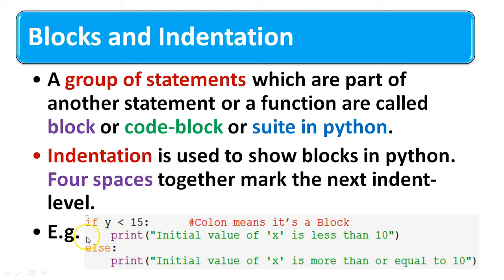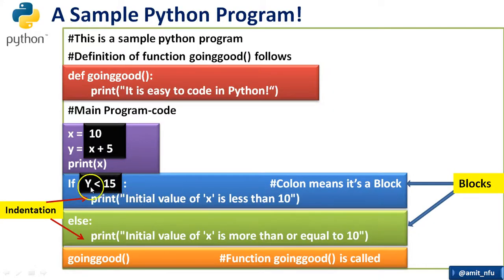This gap of four spaces is called indentation and this whole thing is called a block because indentation is used to show the block and blocks are basically group of statements which are part of another statement, they are part of if. Similar with the else, we will see it in the program. Like here if we see, in if statement we have used indentation, else we are again using indentation and these if-block and else-block are the group of statements.